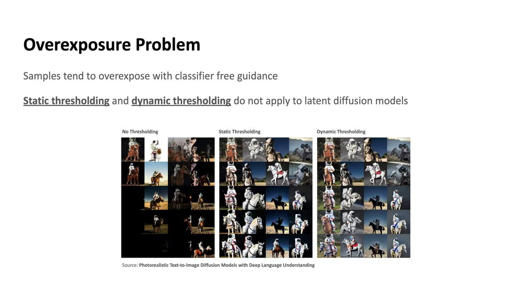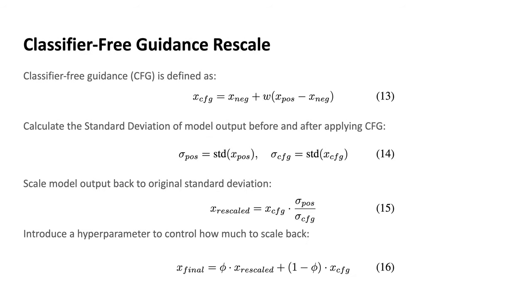Fix number four: rescale classifier-free guidance. We found that as the schedule approaches zero terminal SNR, the model tends to generate overexposed samples with classifier-free guidance. This phenomenon has also been explored by prior work, for example the Imagen paper, which uses a cosine schedule that is much closer to zero terminal SNR and also sees the overexposure problem. They explored static thresholding and dynamic thresholding, which was effective for image space models, but these methods do not apply well to latent diffusion models because the latent space is unbounded. So we propose a more general classifier-free guidance rescale technique for both image space and latent space models.